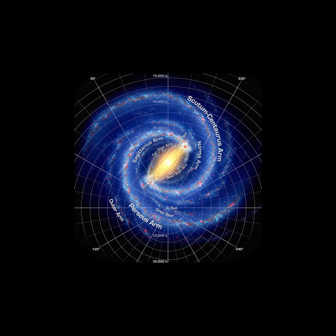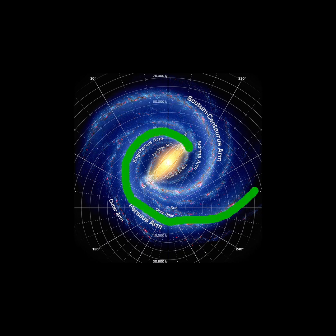The structure of our galaxy consists of two major spiral arms, which are made of gas, stars, and dust. The major spiral arms are called Scutum-Centaurus and Perseus, which are attached to the ends of an elongated galactic bar at the center of the galaxy.